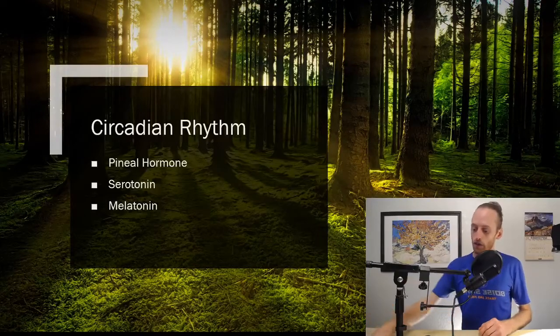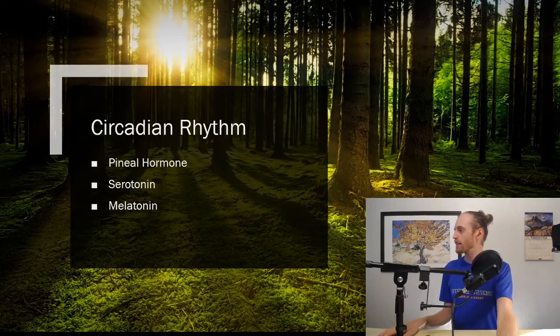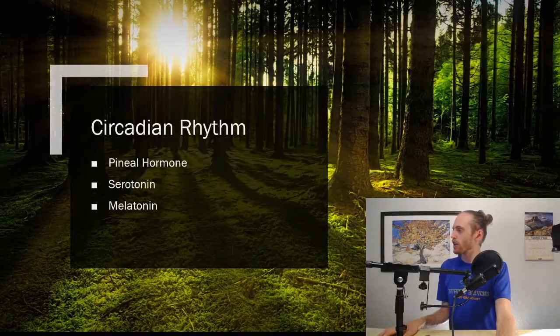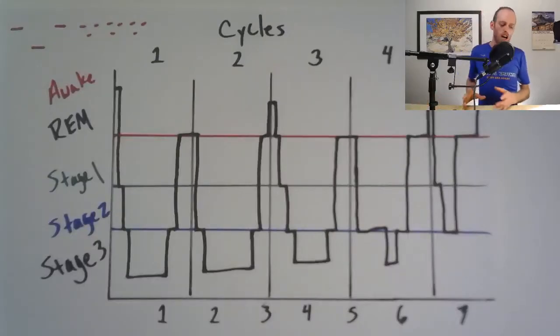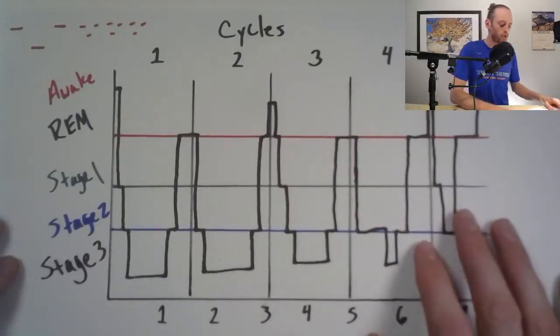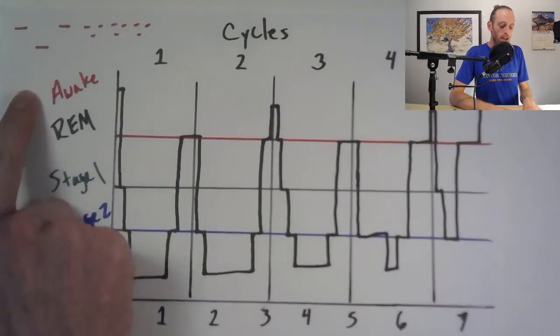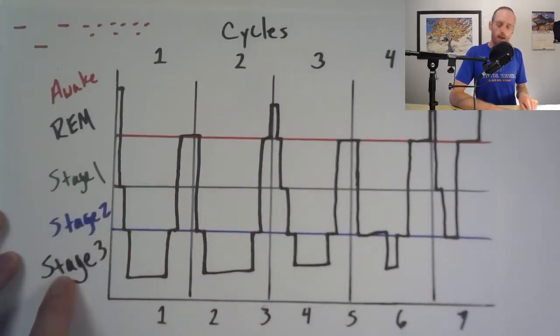Next, let's look at the REM cycles and non-REM cycles. These are the sleep cycles we have right here. So we have awake, and then we have our non-REM sleep, which is stage one, two, and three. Then some people will throw REM as stage four down here.